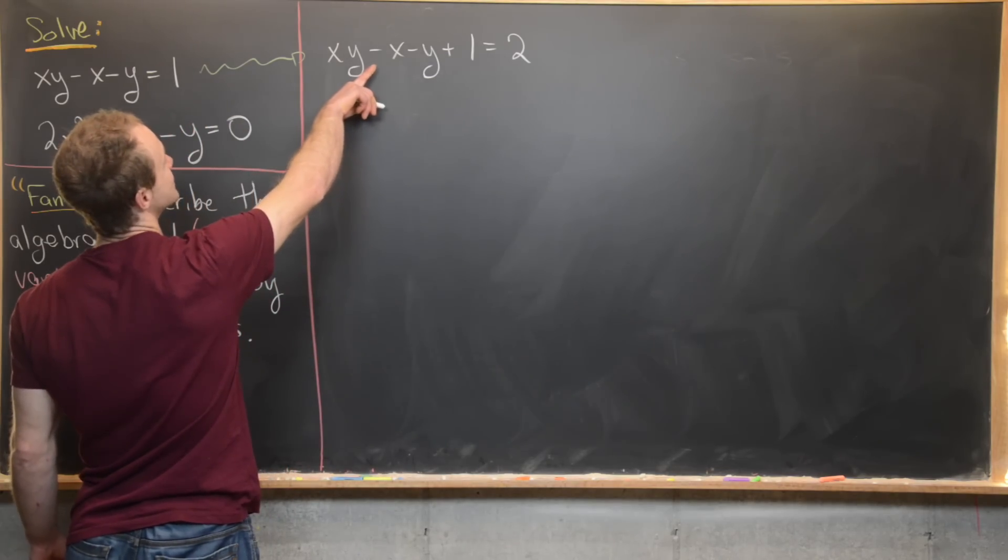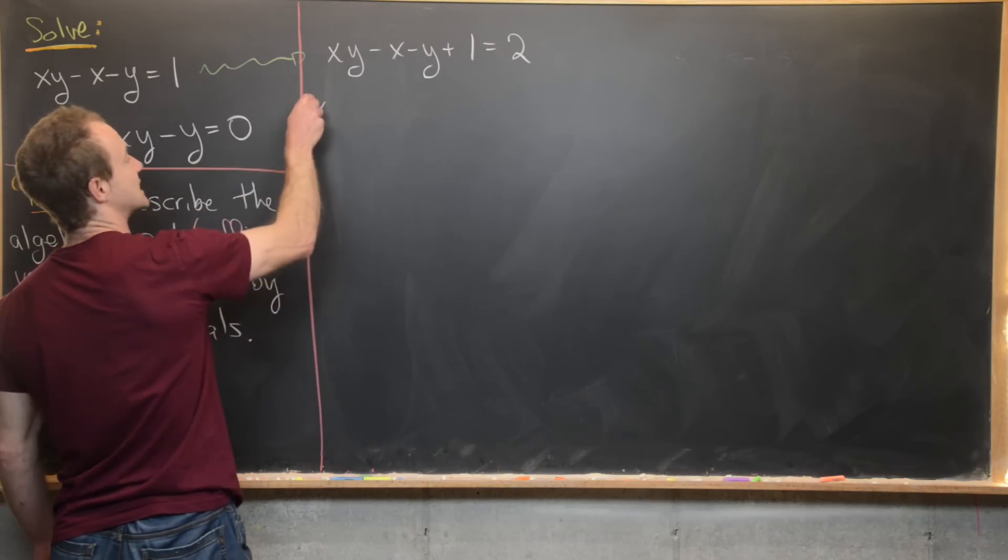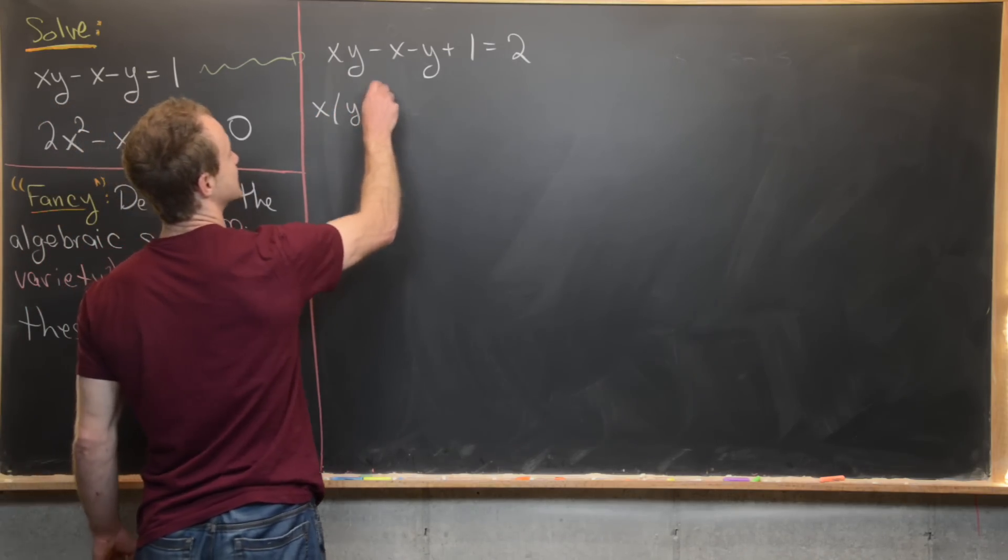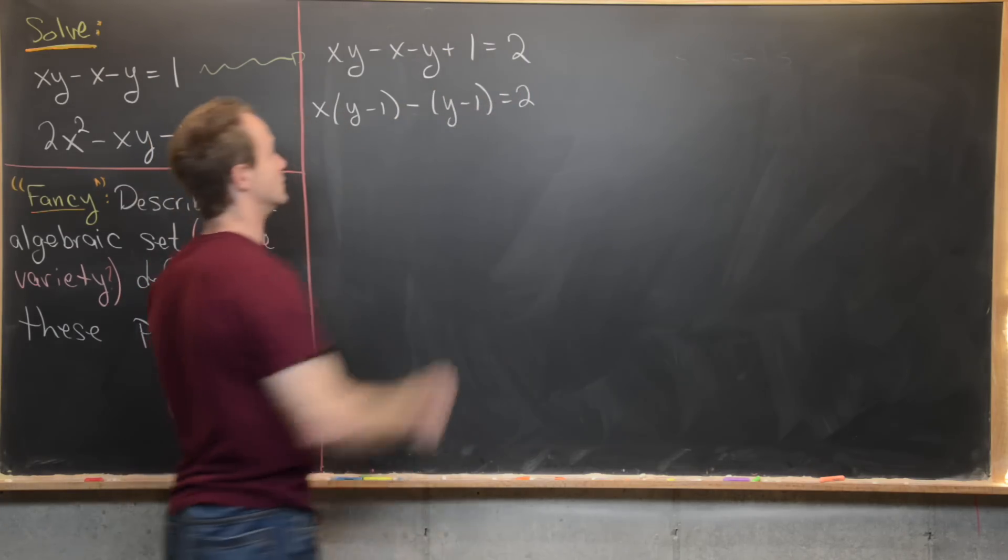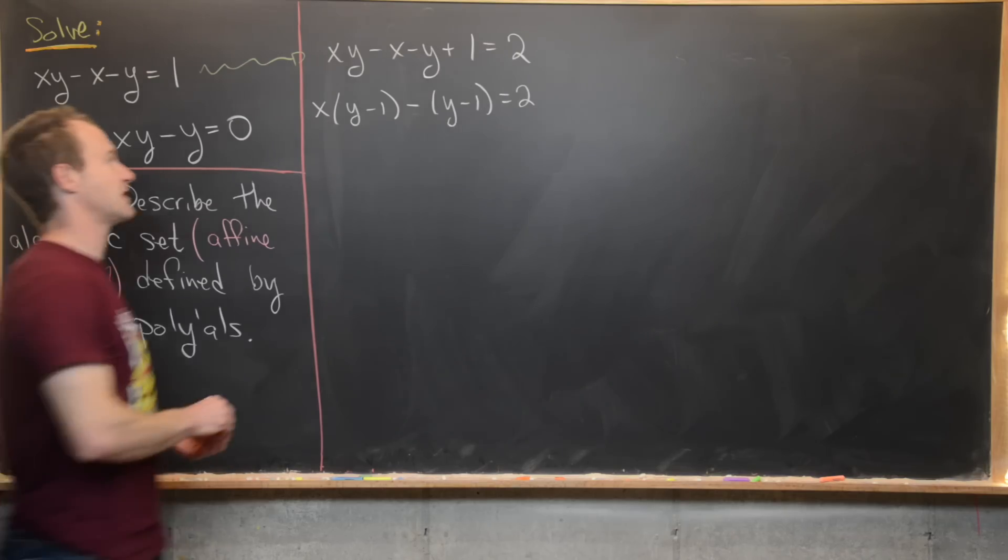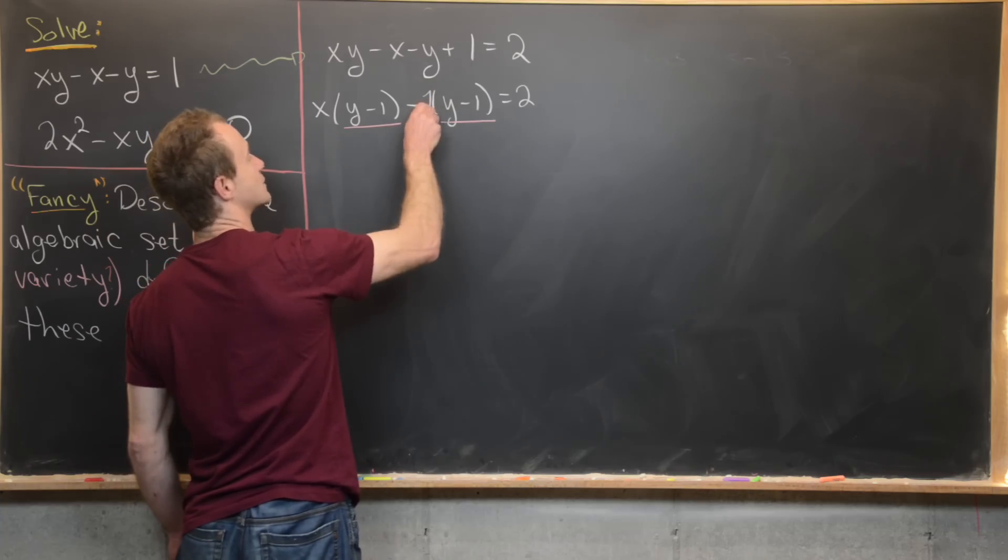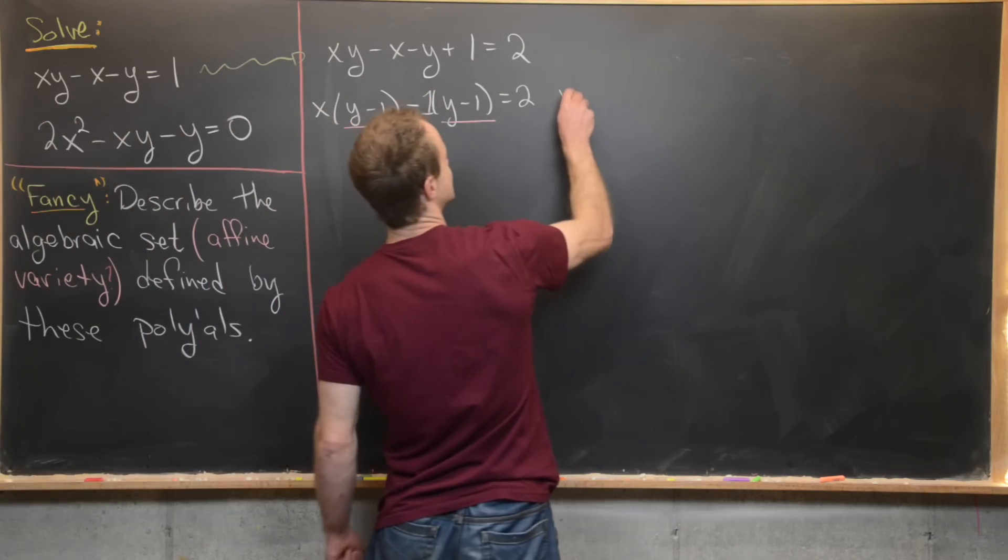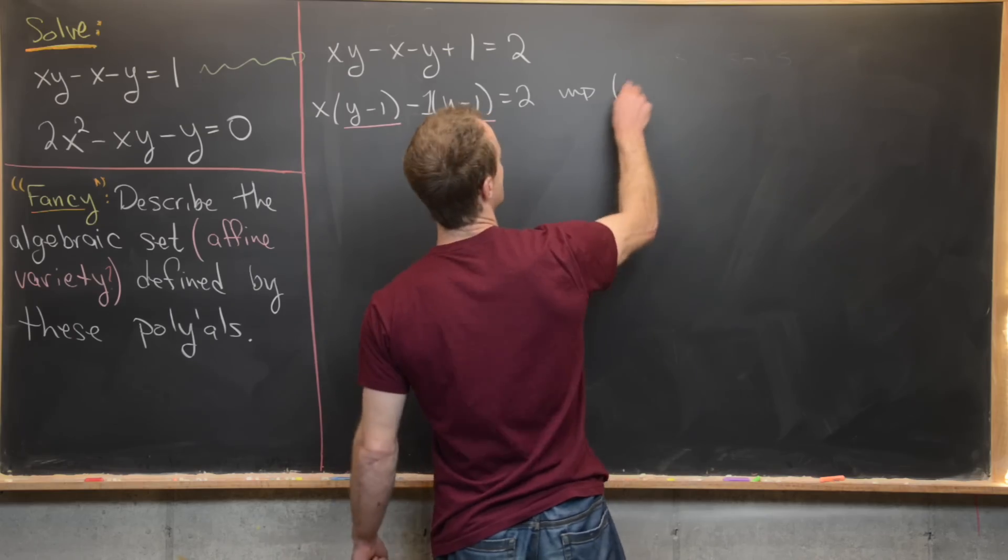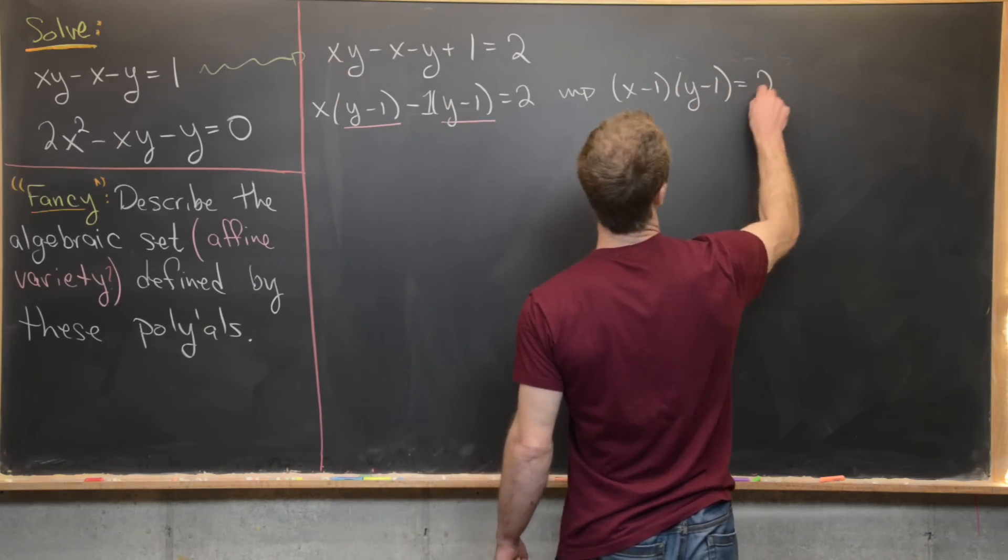We can factor an x out of this first term and a minus one out of this second term. So that's going to give us x(y - 1) - (y - 1) = 2. But now we've got this greatest common factor here, which is y - 1 if we think about putting a coefficient of one right there. And so that gives us the following equation, we have (x - 1)(y - 1) = 2.